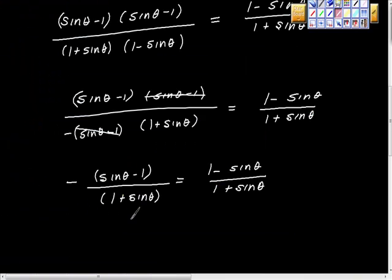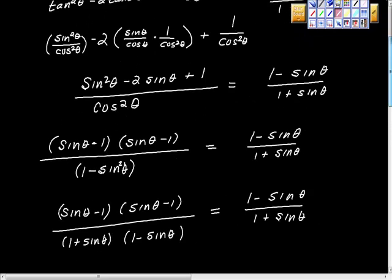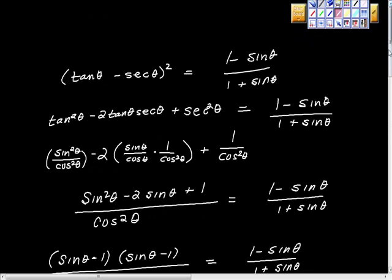Here's the end of our math — here's the beginning of it. So (tan θ - sec θ)² is equal to (1 - sin θ)/(1 + sin θ).